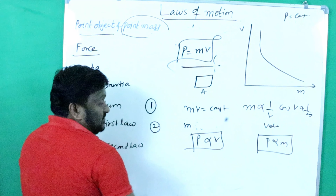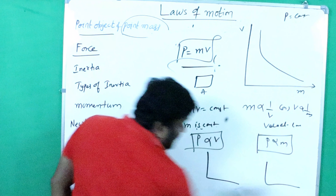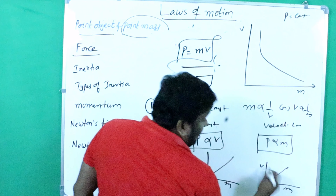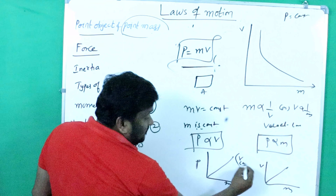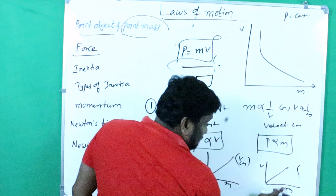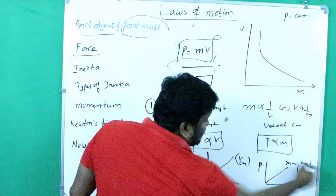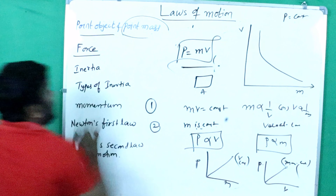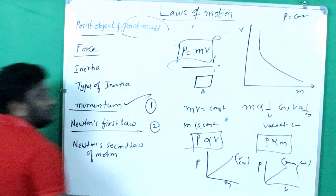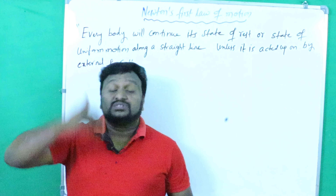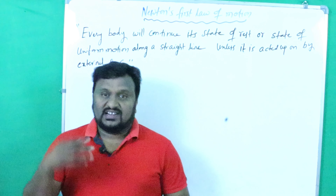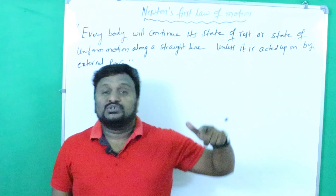Second situation: when mass is constant, p is proportional to v. When velocity is constant, p is proportional to m. In those cases the nature of the graph is a straight line — momentum vs velocity (mass constant) and momentum vs mass (velocity constant) are both straight lines.